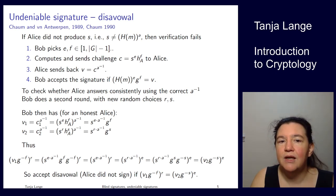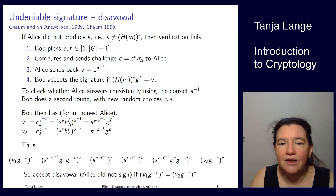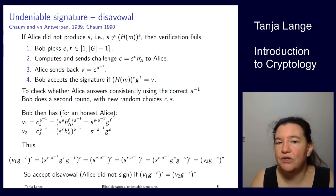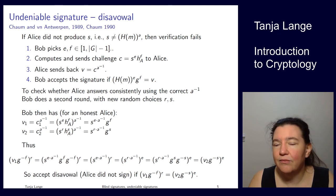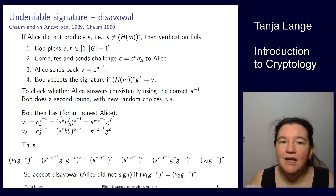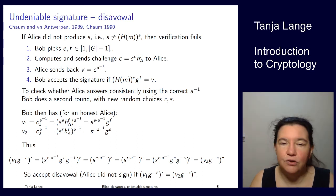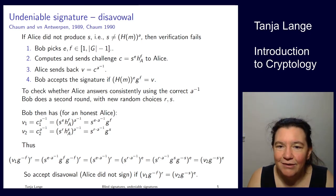If Alice had used a different exponent, the second protocol wouldn't work because the exponent would not cancel properly on the hash term — she would leak that the signature was invalid or that she was trying to evade responsibility.